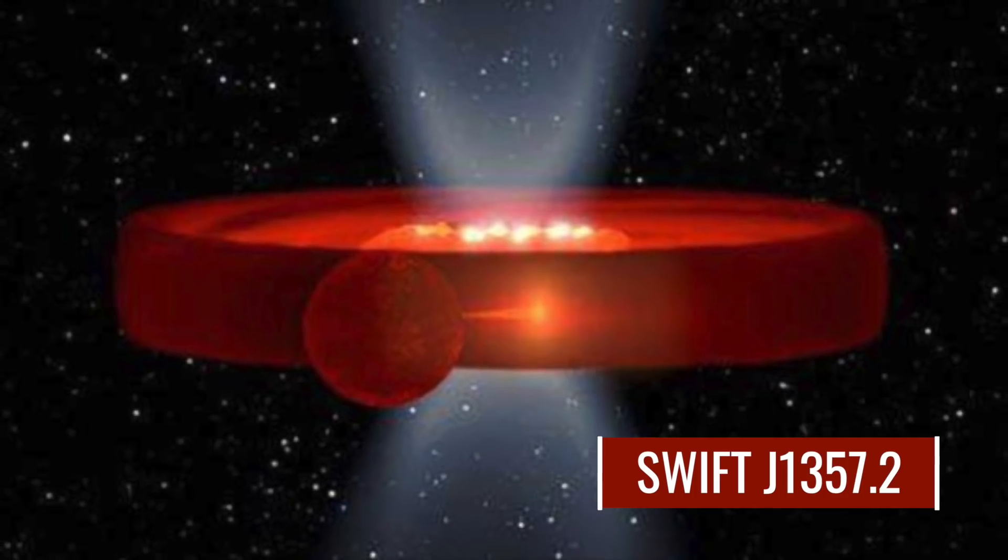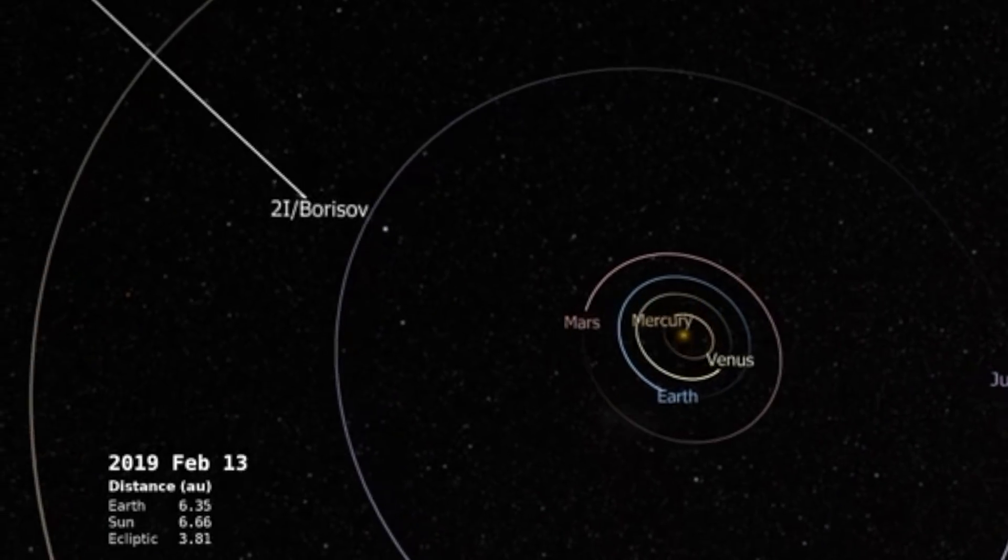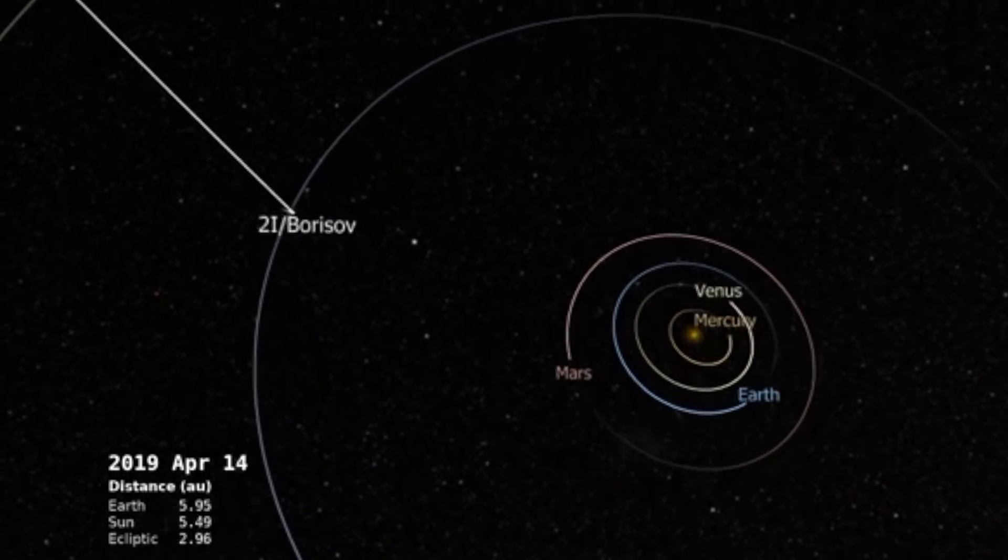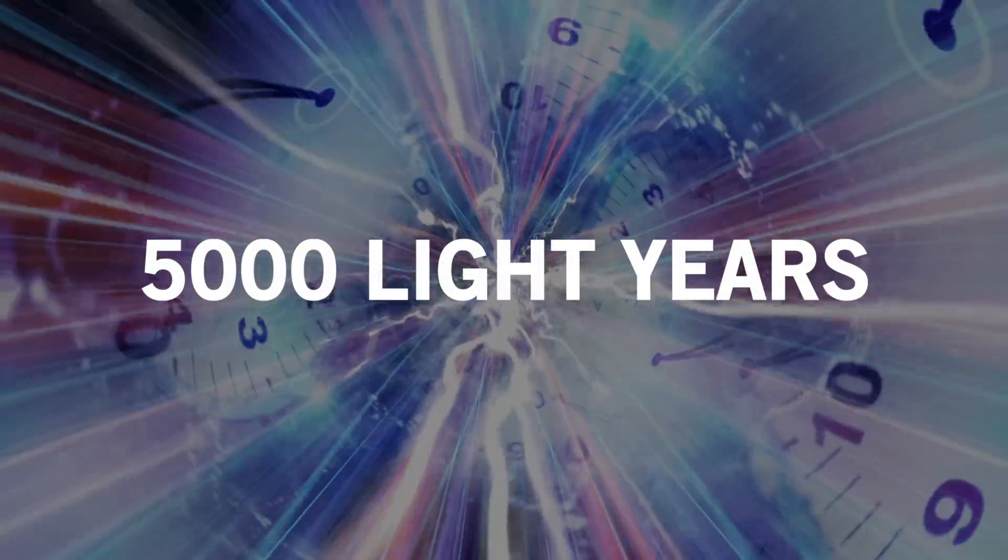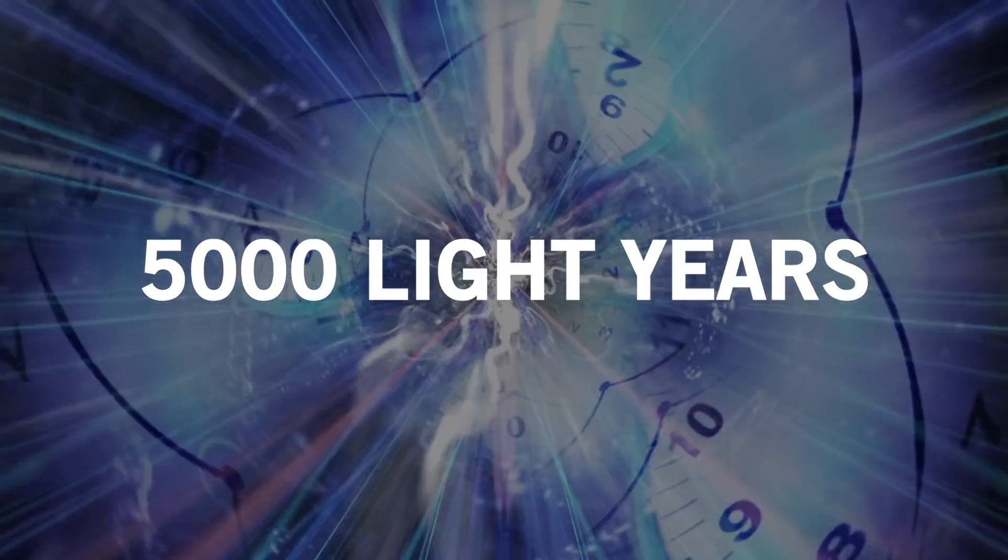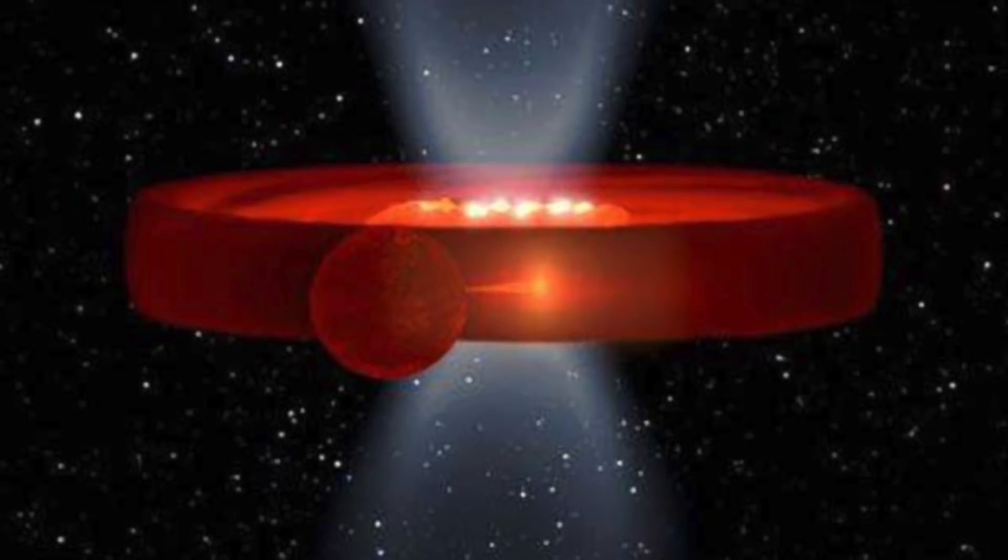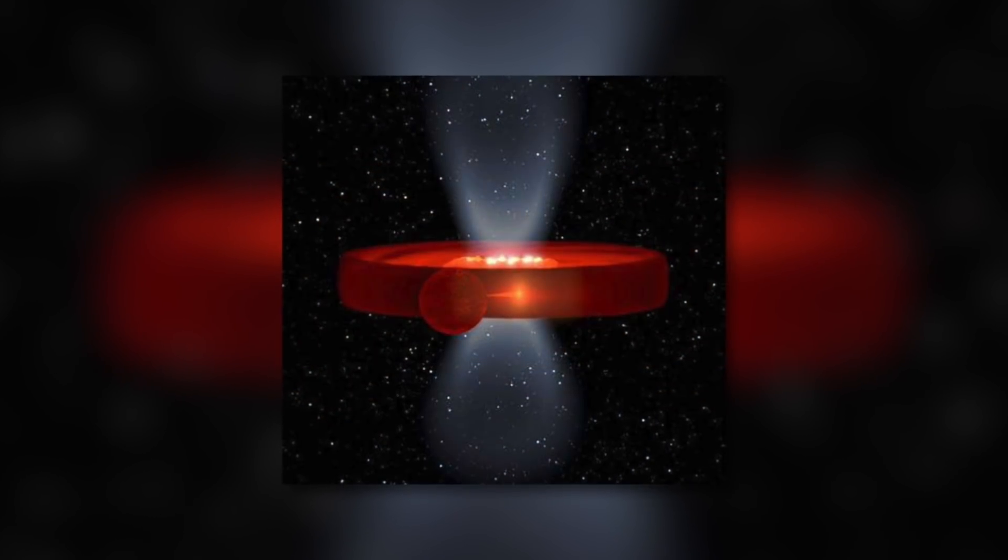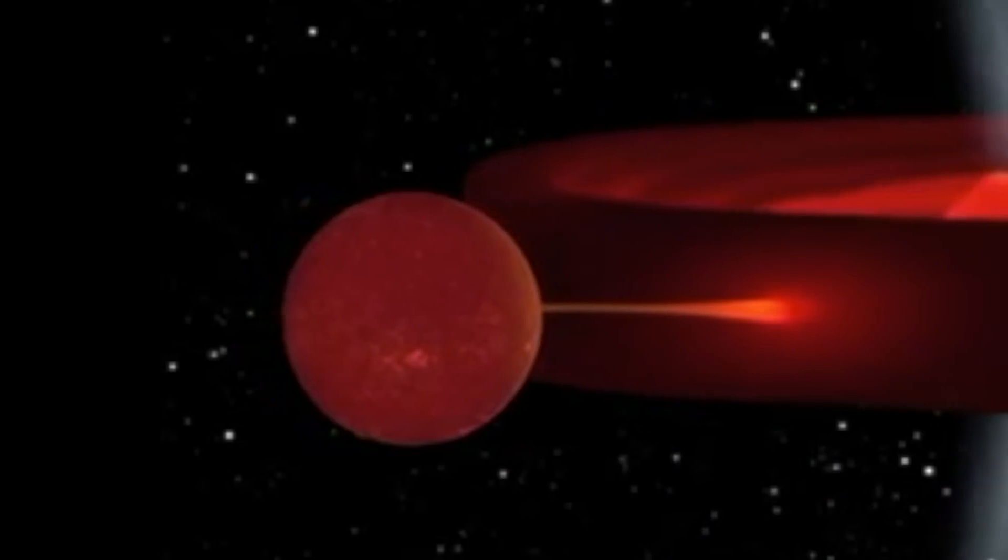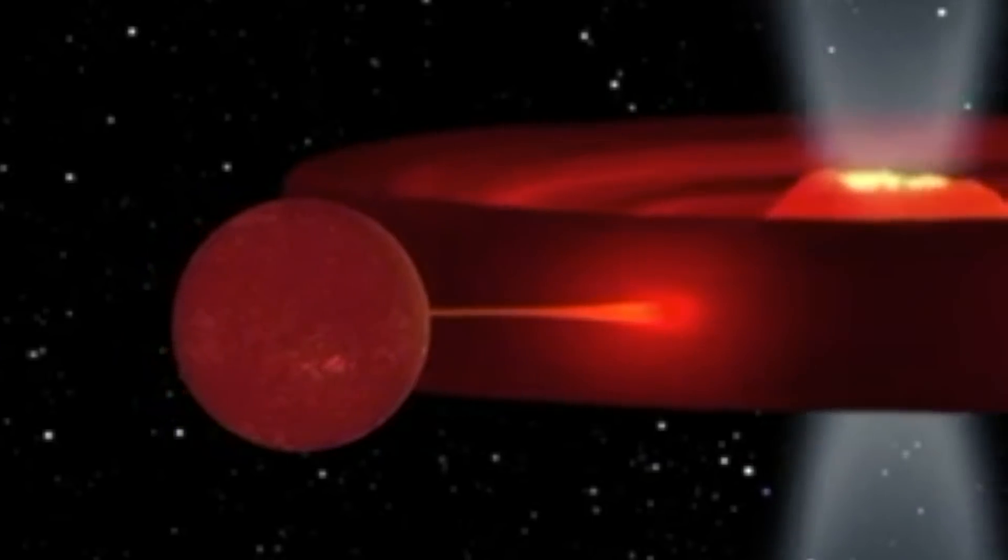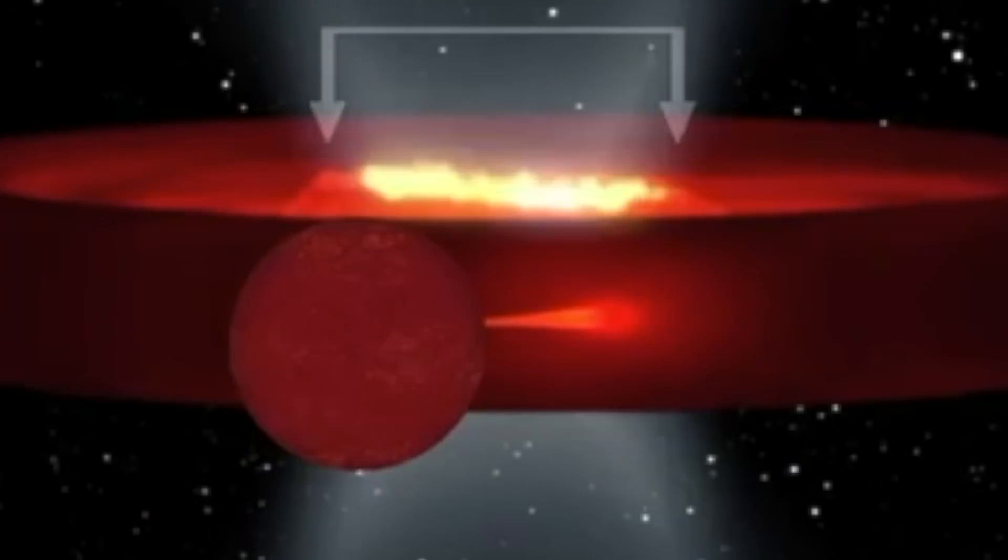Swift J1357.2. Celestial bodies such as 2I Borisov are not the only galactic formations that attract the interest of international research teams. About 5,000 light years away from Earth, scientists discovered a strange structure which has been named Swift J1357.2. However, very little is known about the composition of this mysterious structure. Some experts suspect that Swift J1357.2 is an extremely complex binary system which in detail consists of a star and a black hole.